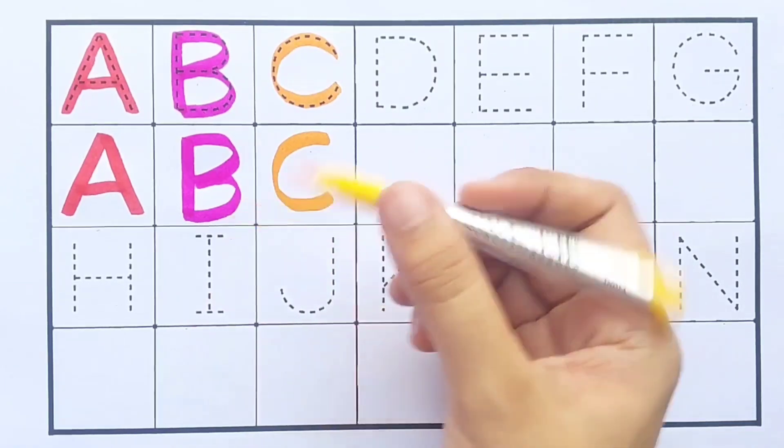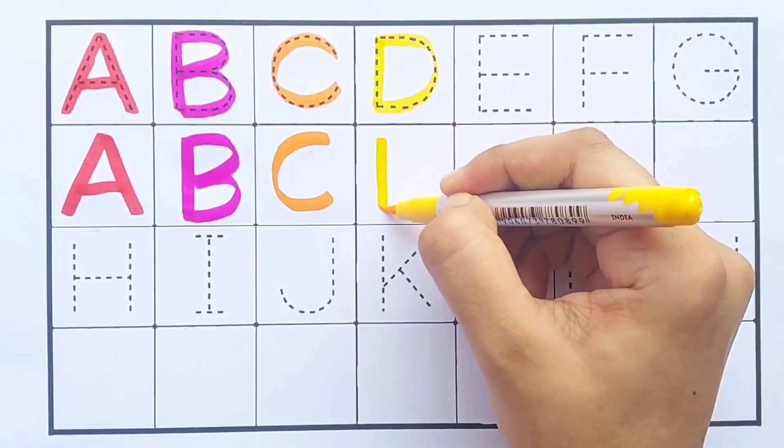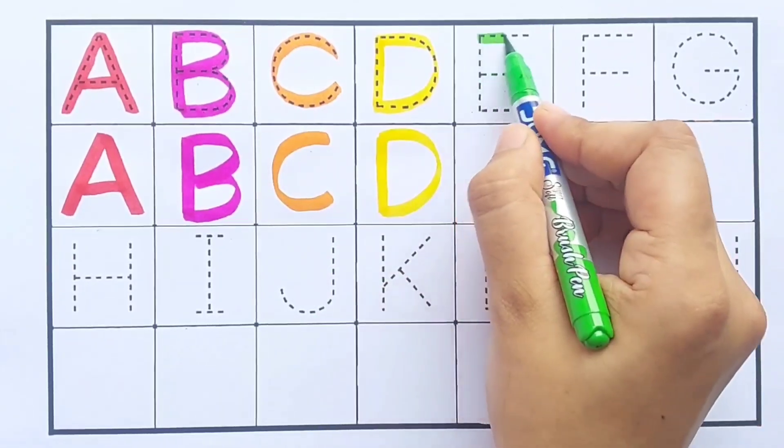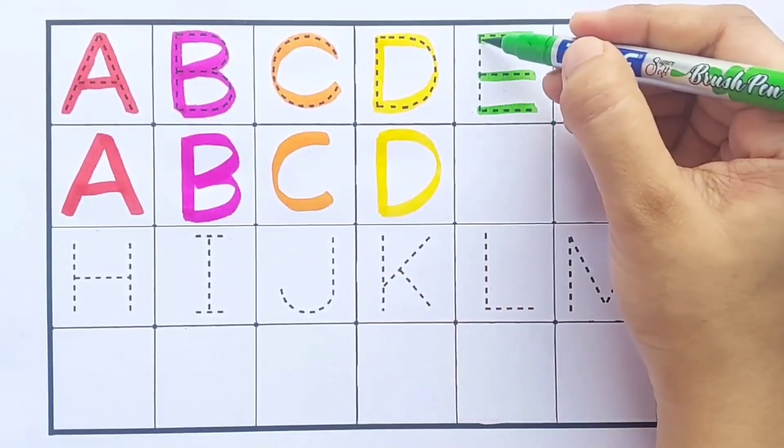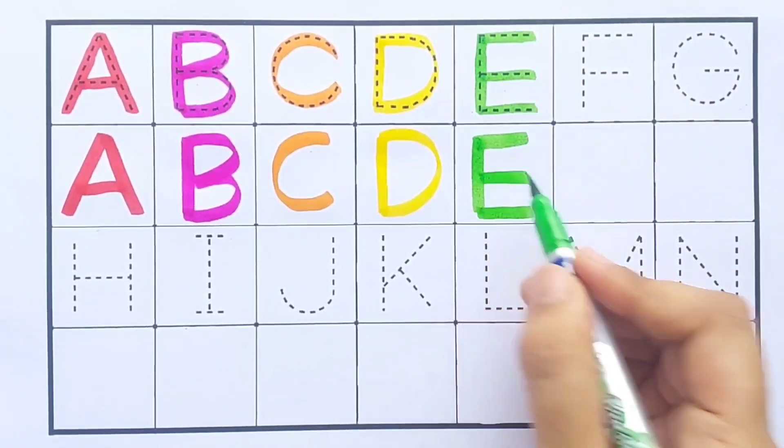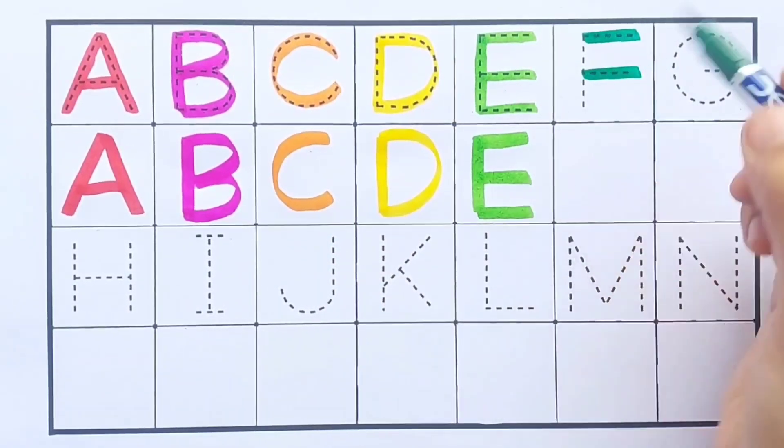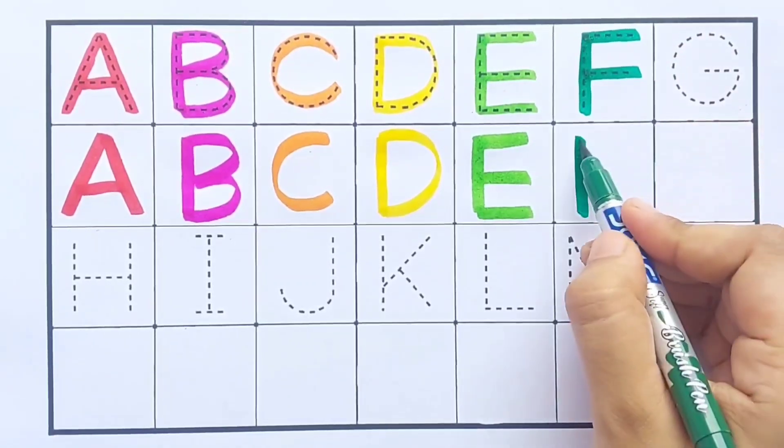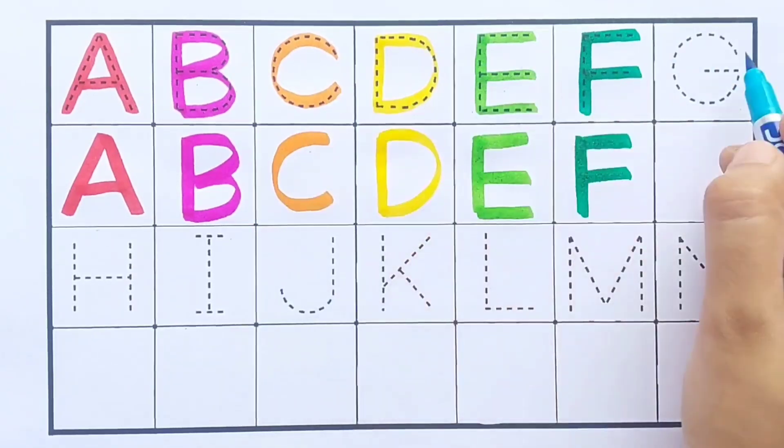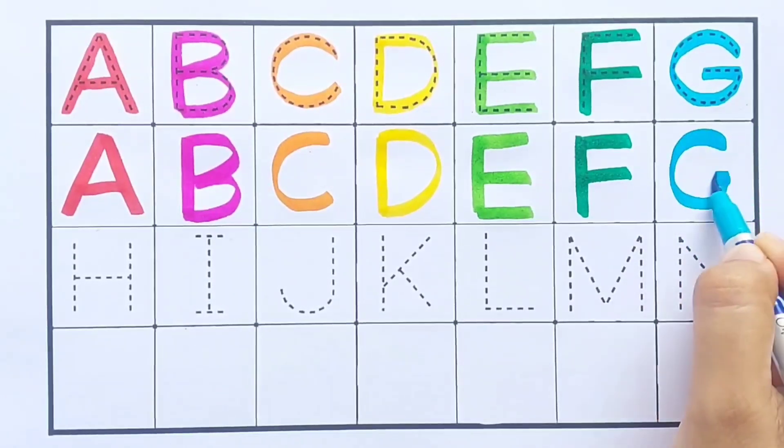Yellow color, D. D for dog. Light green color, E. E for elephant. Green color, F. F for fish. Sky blue color, G. G for grapes.